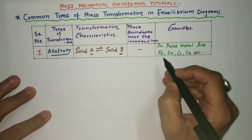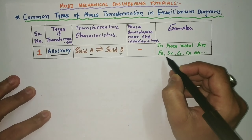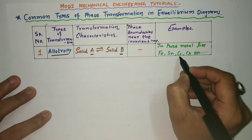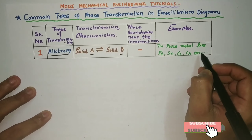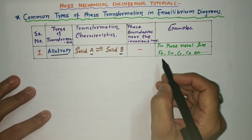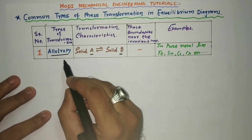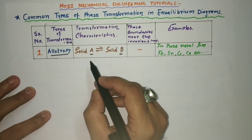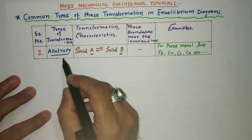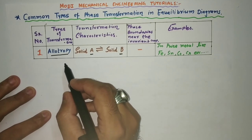Examples of allotropy include iron, tin (Sn), cobalt, chromium, and more. You can take any pure form of metals to study the phase transformation from one phase to another phase. This is known as allotropy — in simple terms, different temperatures produce different microstructures.